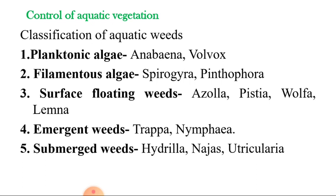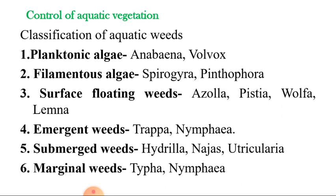The next type is submerged weeds, like Hydrilla, Najas, and Utricularia. Some plants are completely submerged and rooted in the bottom soil, while some weeds are free-floating submerged weeds, like Utricularia.